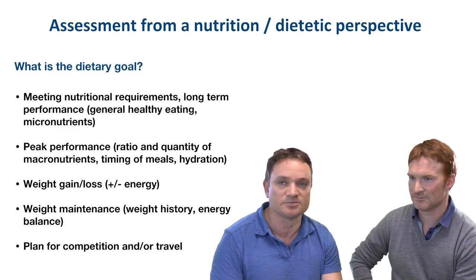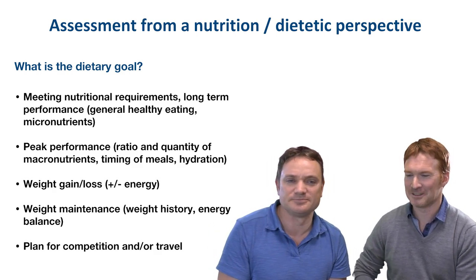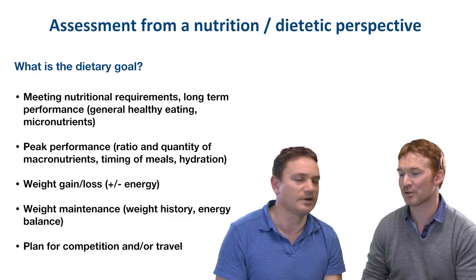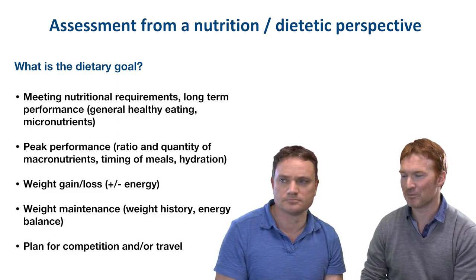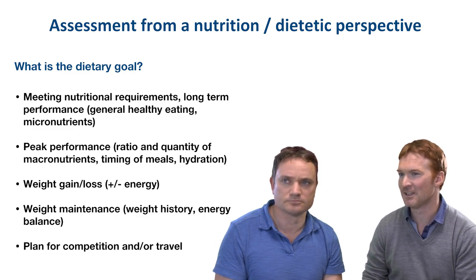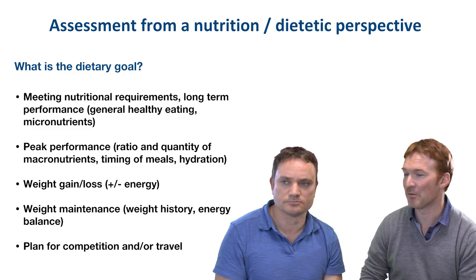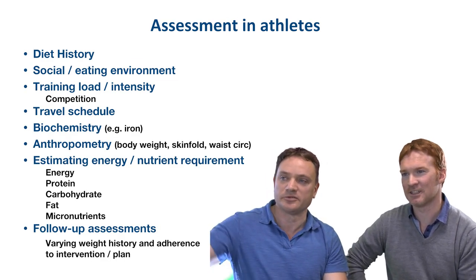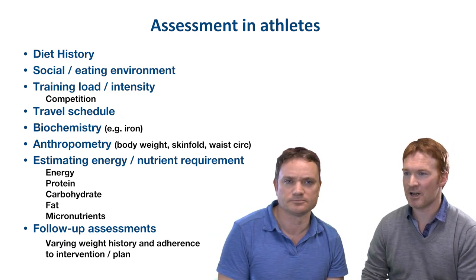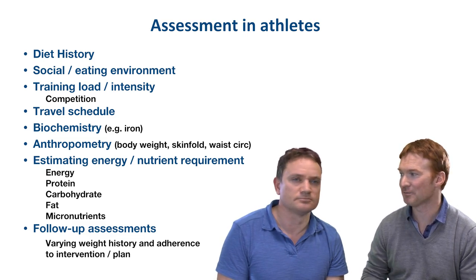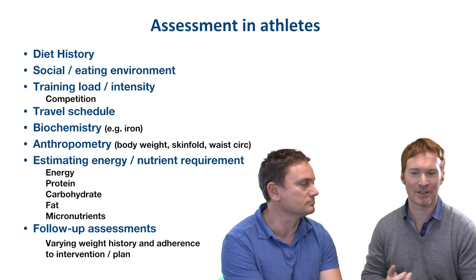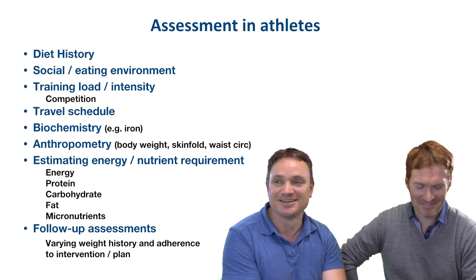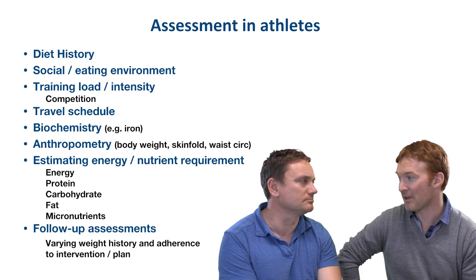Before assessing diet, it's essential to understand the dietary goal — whether it's weight loss, weight gain, performance, competition planning, or travel. This informs the assessment and dietary plan going forward. The full assessment also needs to cover social history: whether the athlete is flatting, living with parents, married with family — all of which greatly impact what meals they can realistically have and how they can modify their diet.